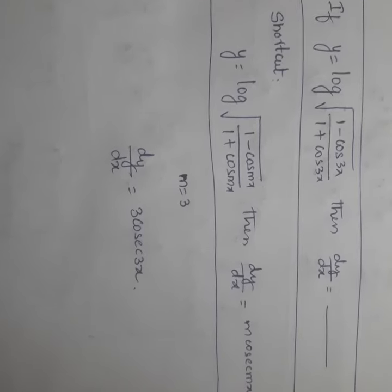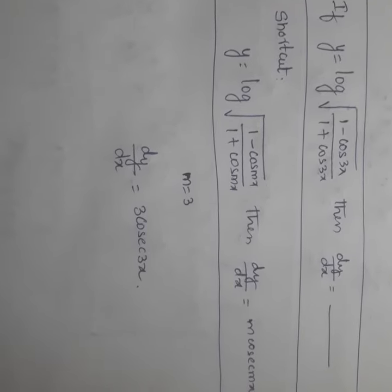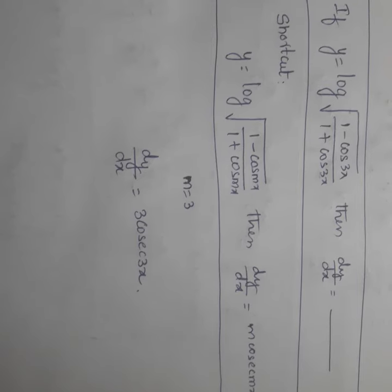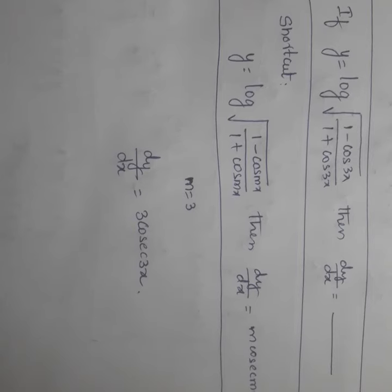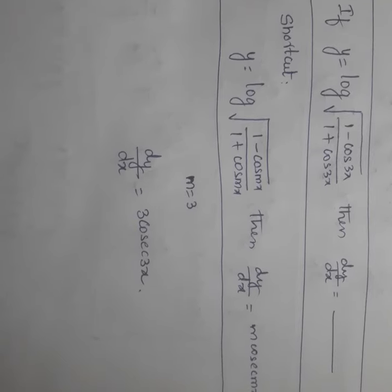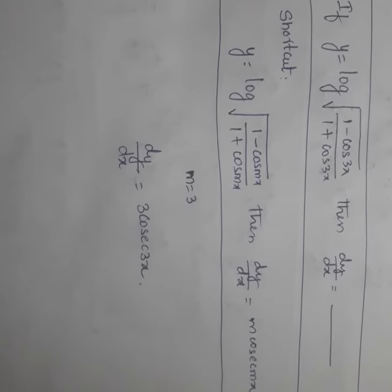In order to solve this problem, there is one shortcut present in IIT and M SAT. The shortcut is: y is equal to log of under root of 1 minus cos mx by 1 plus cos mx, then dy by dx is equal to m cosecant mx.